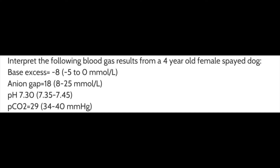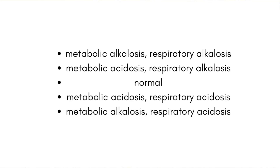Now for a second practice question. Interpret the following blood gas results from a four-year-old female spayed dog: base excess is negative eight, anion gap is 18, pH is 7.3, and pCO2 equals 29. The answer choices are: metabolic alkalosis/respiratory alkalosis, metabolic acidosis/respiratory alkalosis, normal, metabolic acidosis/respiratory acidosis, or metabolic alkalosis/respiratory acidosis.